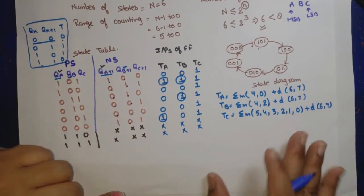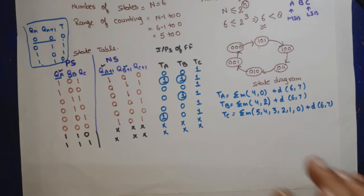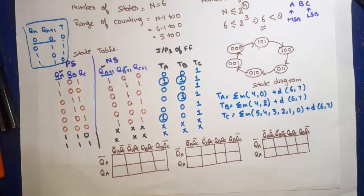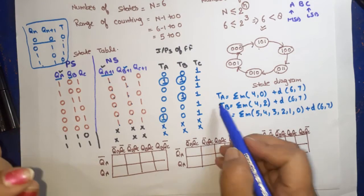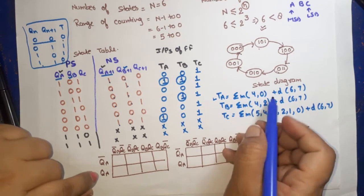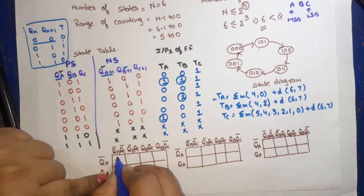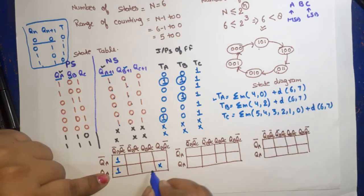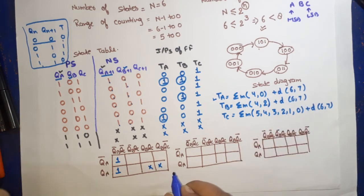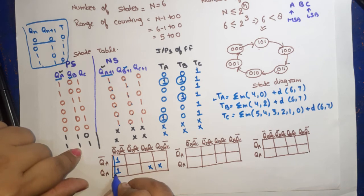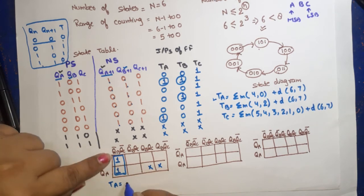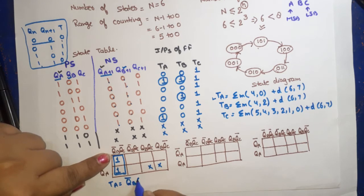Now I'll make three K-maps and put values in them. For TA, minterms are 4 and 0. Don't cares are 6 and 7. A pair is formed in this column. So TA is equal to QB bar QC bar. This is the equation.